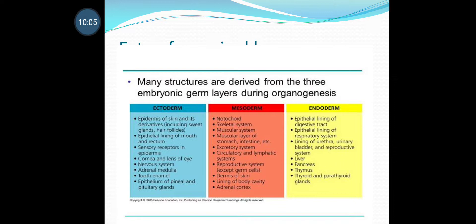Mesoderm gives rise to: muscles, connective tissues, dermis of skin, adrenal cortex (note: medulla is formed by ectoderm, cortex by mesoderm), heart, blood vessels, lymphatic vessels, middle ear, dentine of teeth, urinary and reproductive ducts, gonads, kidneys, choroid of eye, and sclera of eye. Endoderm forms: epithelium of midgut, glands of stomach and intestine, tongue, tonsils, lungs, trachea, bronchi, larynx, urinary bladder, vagina, liver, pancreas, thyroid gland, parathyroid gland, thymus gland, Eustachian tube, epithelium of urethra, and lining of middle ear.